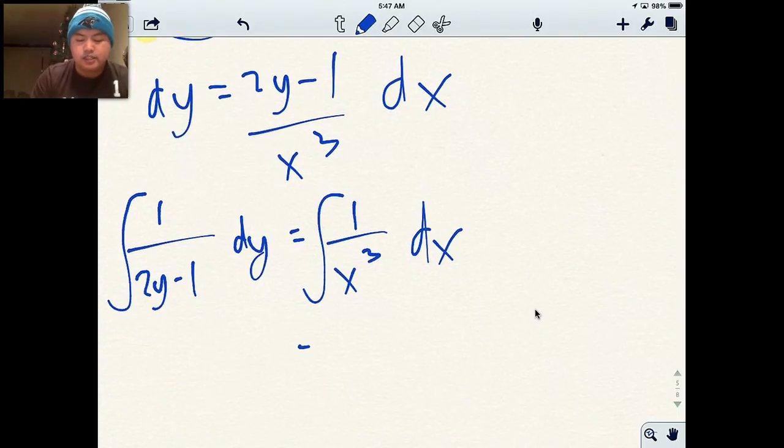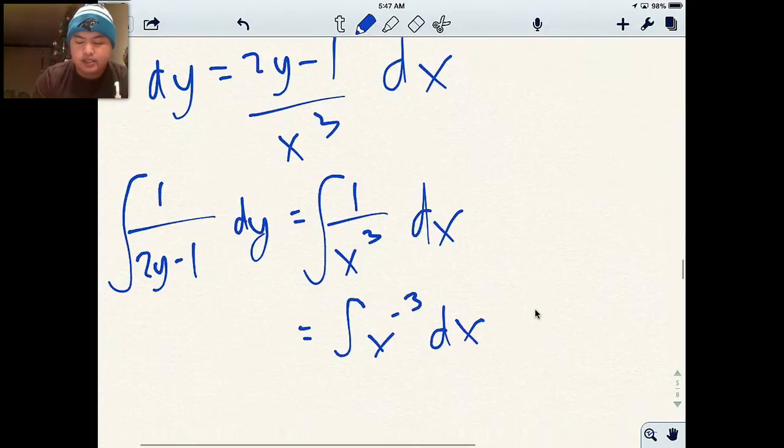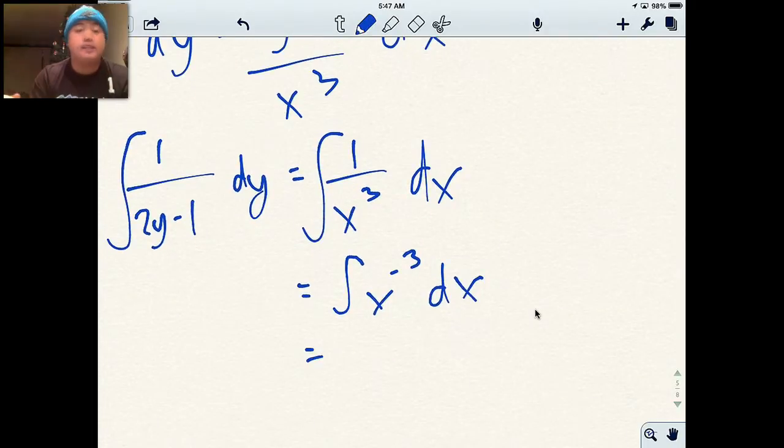The right side is going to be the easier one. This means the exact same thing as x to the negative 3. And the antiderivative of x to the negative 3 is I raise it by 1, which makes it x to the negative 2. And I divide by that number. So this becomes 1 over negative 2, x to the negative 2 plus c.